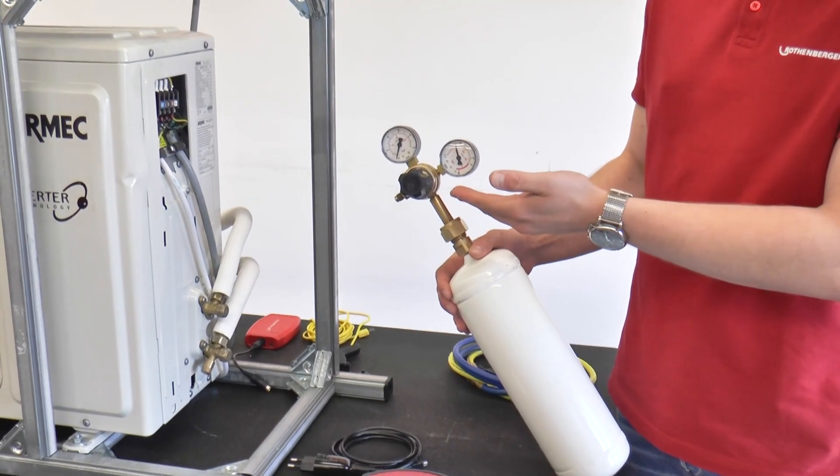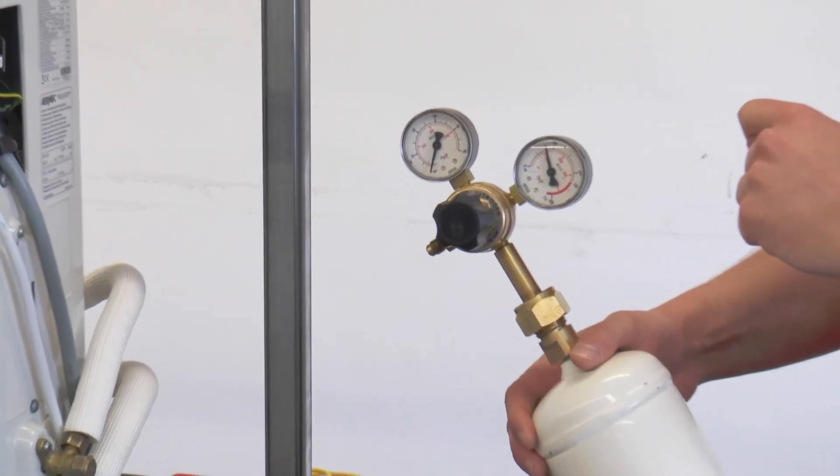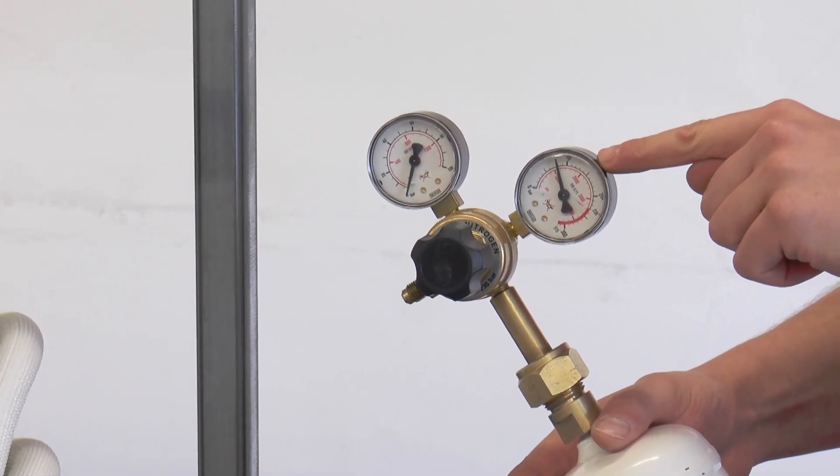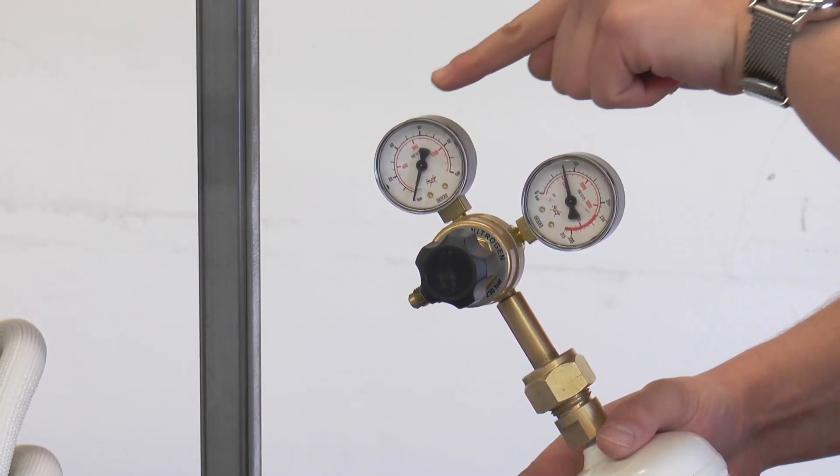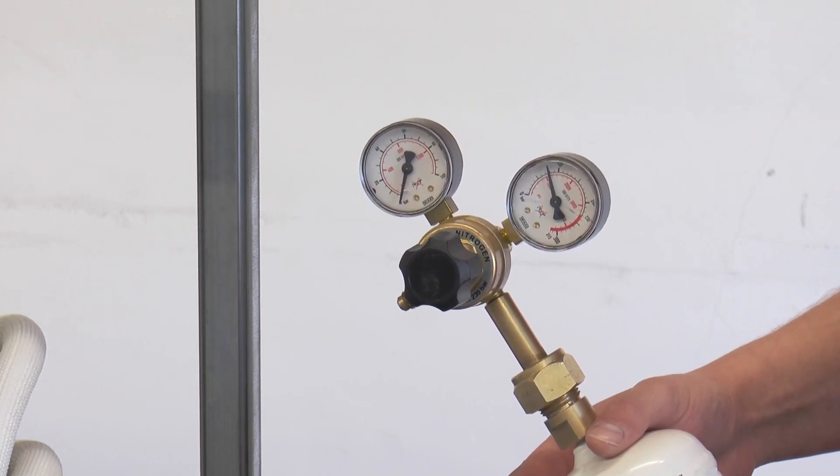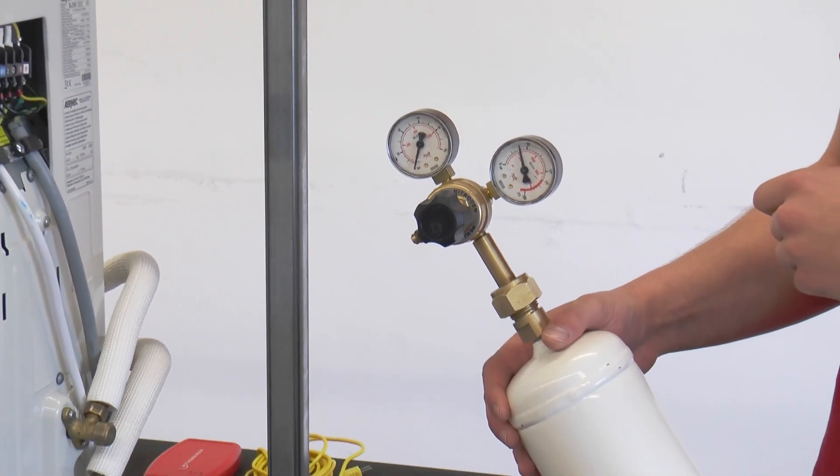A pressure reducer is connected to the nitrogen cylinder. The pressure reducer is equipped with two pressure gauges. The pressure gauge facing the cylinder indicates the cylinder pressure. Working pressure is indicated on the manometer that stands out. In refrigeration technology only dry nitrogen with a quality class of at least 4.6 is used.